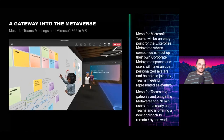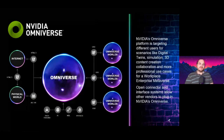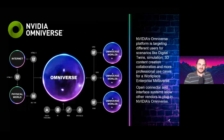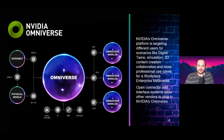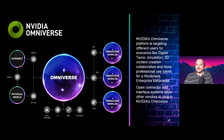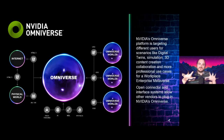NVIDIA Omniverse is a collaboration platform for professional workplace use cases. You can run physical simulations, create large digital twins, and bring in 3D data from tools like Revit, Maya, and 3ds Max. You can collaborate seamlessly with colleagues and quickly visualize in augmented reality.